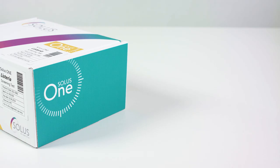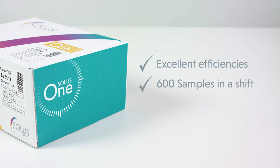With the automation of Solus1 assays, excellent efficiencies can be achieved. A single instrument can screen up to 600 samples in a shift and one operator can run two instruments.